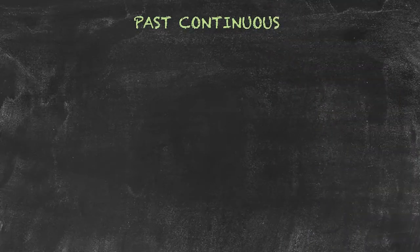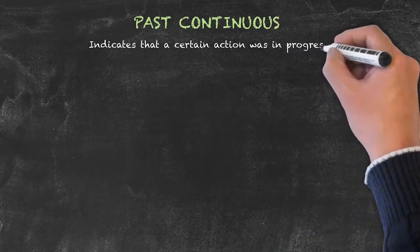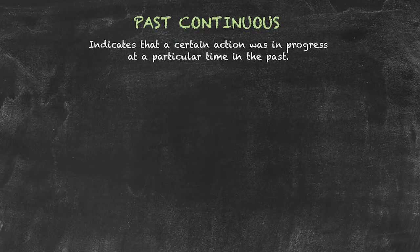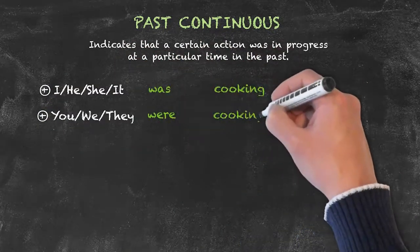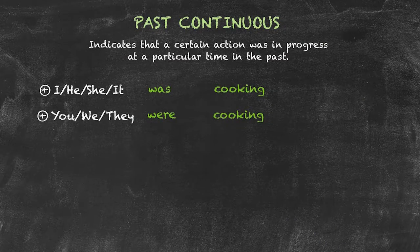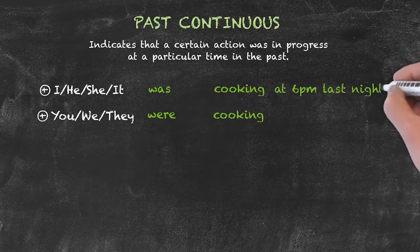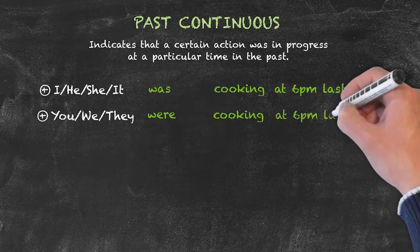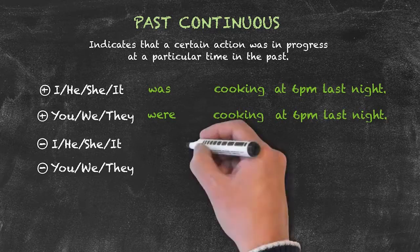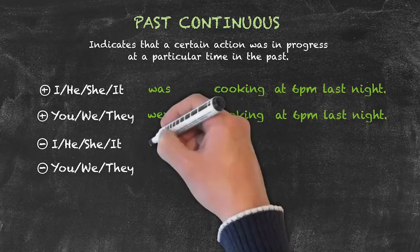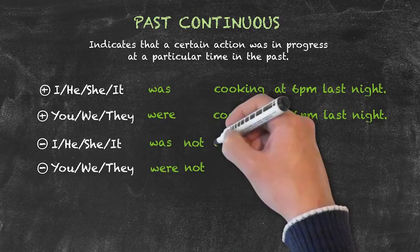Now let's have a look at the past continuous tense. This tense is used to indicate that a certain action was in progress at a particular time in the past. We form the positive form by using our subjects, the auxiliary verb to be, plus the verb plus ing, also known as the present participle. So it results in sentences such as, he was cooking last night, or we were cooking last night.